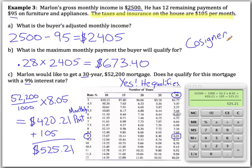One benefit of a cosigner is that you can actually get into the house. However, if you can't pay, the cosigner is still liable for the loan and any penalties associated with breaking the mortgage. So cosigners are usually people who trust you — most often your parents.